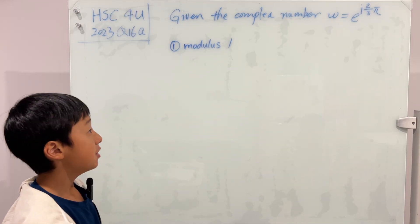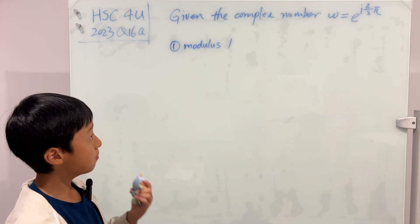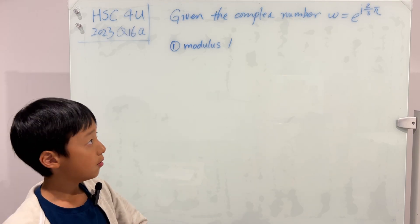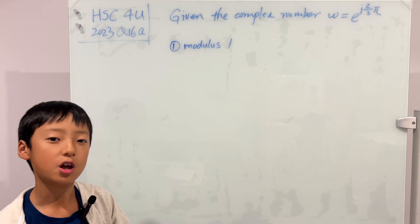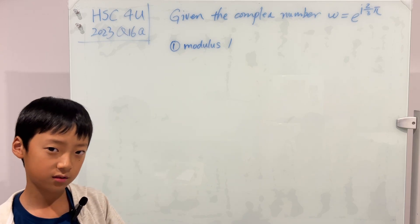And another thing is that if you multiply any complex number by w, it only changes its direction, not its magnitude.